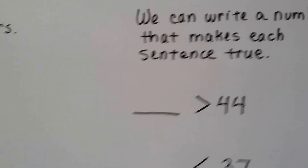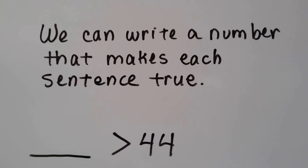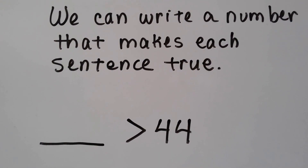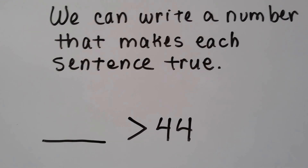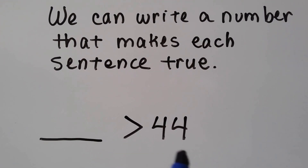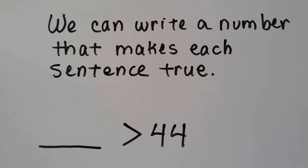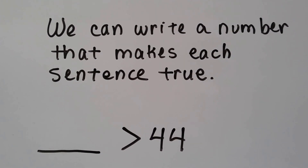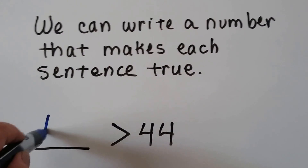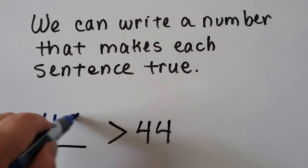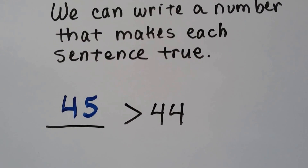We can write a number that makes each sentence true — we can pick any number we want as long as it makes it true. Some number is greater than 44, so we can pick any number that is bigger, greater than 44. Even 45 — that's got one more one, that's greater than 44.